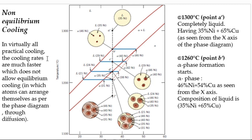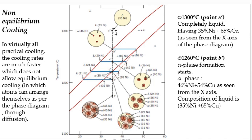Starting from point A' at 1300°C, everything is liquid with 35% nickel and 65% copper—the same composition as before but with non-equilibrium cooling.